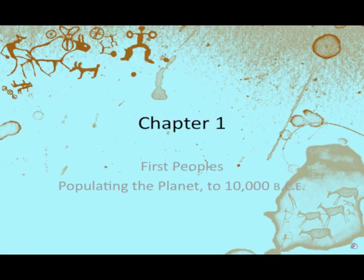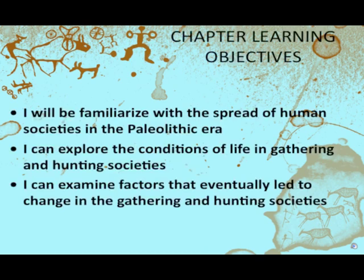Chapter 1: First Peoples — Populating the Planet to 10,000 BCE. You should be able to familiarize yourself with the spread of human societies in the Paleolithic era — the Old Stone Age we'll be covering in Chapter 1. You should also be able to explore the conditions of life in gathering and hunting societies, which will set the stage for the agricultural revolution in Chapter 2, and ultimately the merging of civilizations into empires and dynasties.